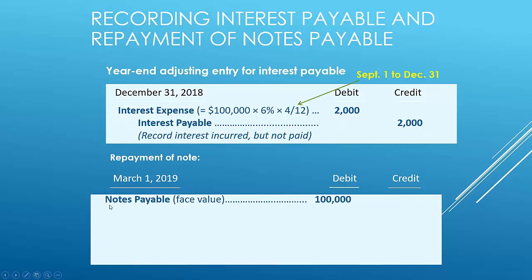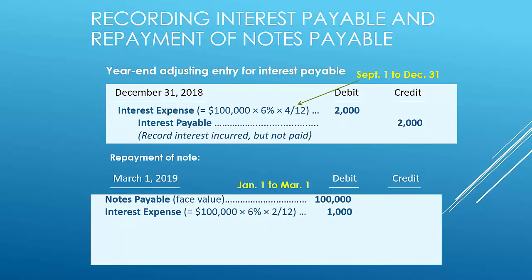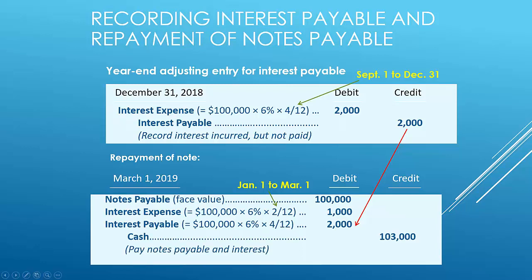On March 1st of the following year, they pay the note back to Bank of America. They decrease notes payable with a $100,000 debit, then record two months of interest expense for 2019 — January and February: $100,000 times 6% times 2/12 equals $1,000. They also clear the interest payable from 2018, and pay Bank of America $103,000 total — the $100,000 borrowed plus $3,000 in interest.